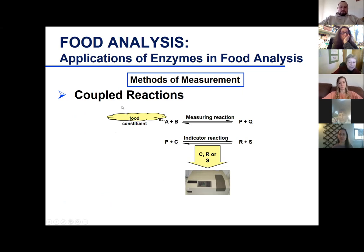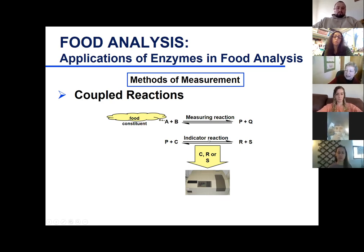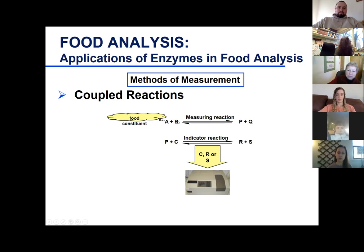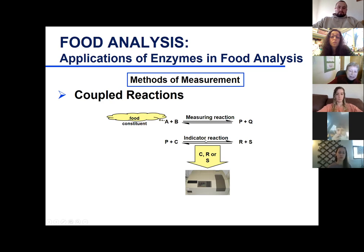Another principle we need to understand is coupled reactions — two reactions, a measuring reaction and an indicator reaction, using two different enzymes. Let's say we have compound A that we want to measure. We react it with another compound using the first enzyme to generate products. One of those products becomes the reactant in the second reaction. We add a second reactant and another enzyme and generate final products. We can then quantitate one of those final products, or measure the decrease in the amount of a co-reactant.